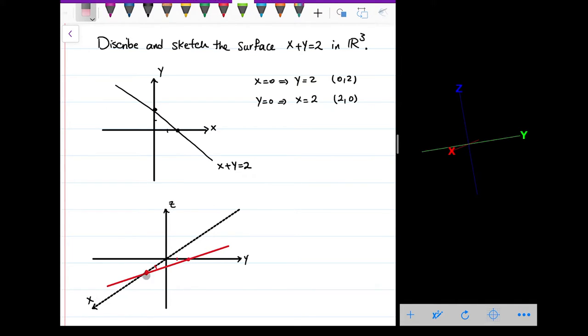Now this is on the horizontal plane, x-y plane, when I don't have the height, when I don't have the z. But as you see here, if I want to graph it in R³, z is free. It means that z can be anything.